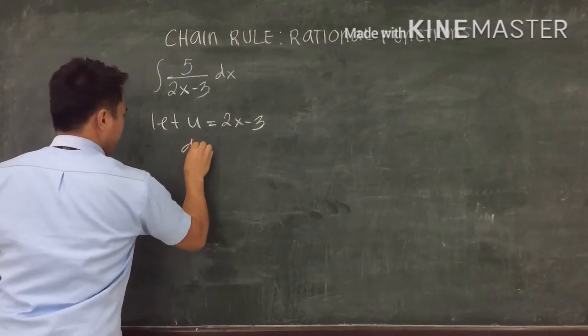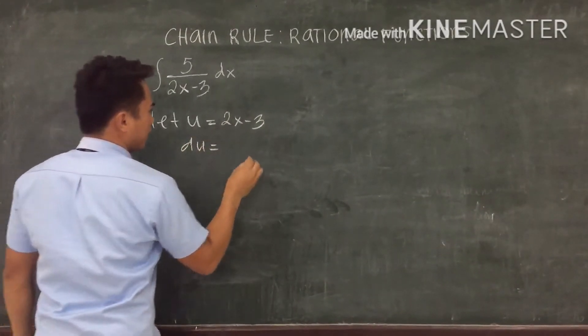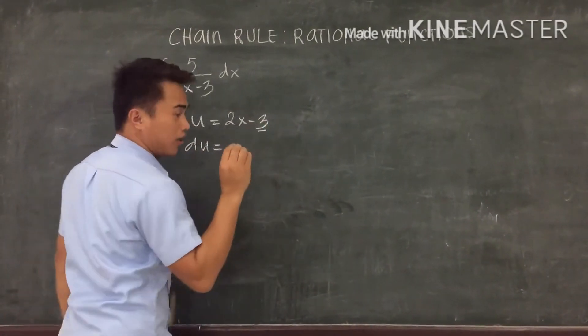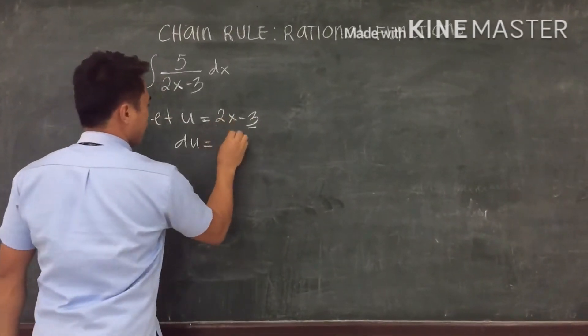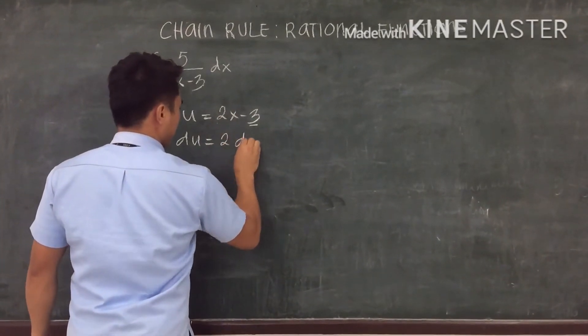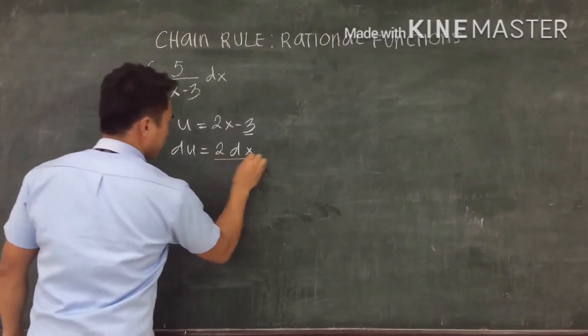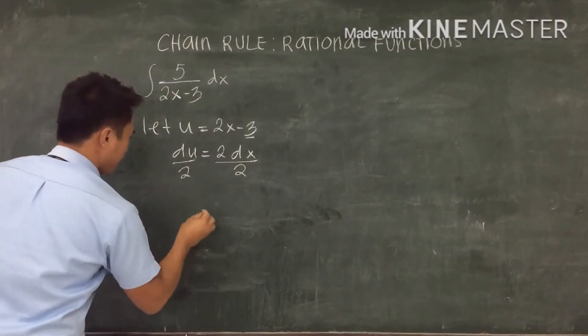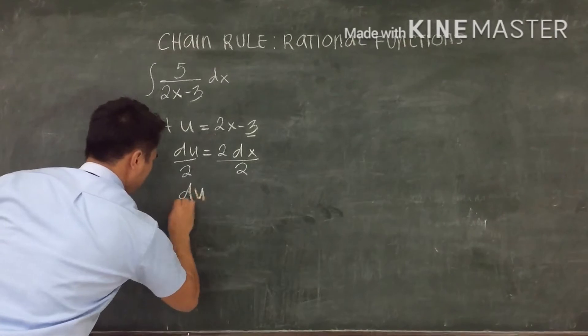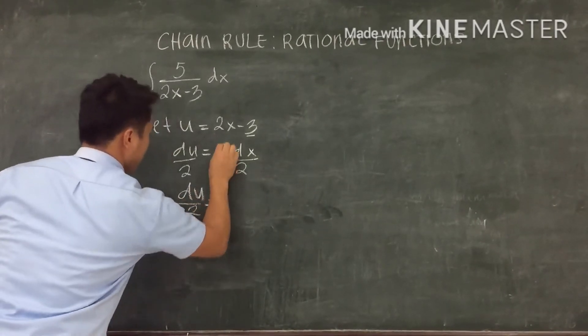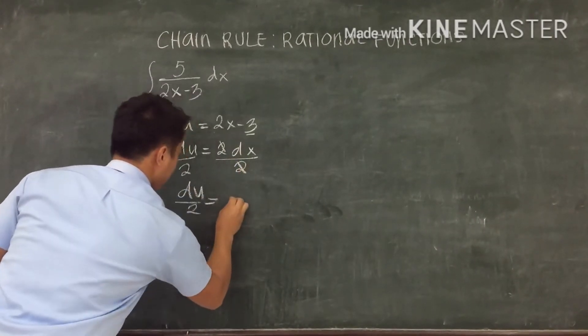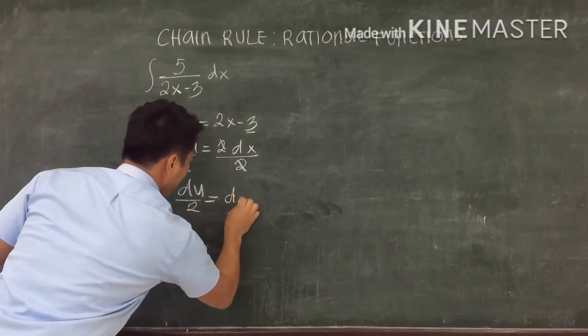So du, the derivative of 3 is 0 and the derivative of 2x is 2dx. So divide by 2 both sides and du over 2 becomes dx.